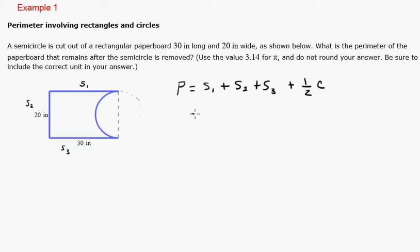So S1 would be the same as S3, right? This is like a rectangle. So this would be 30 plus 20 plus 30 plus one half. And what's the formula? The formula for circumference is 2 pi r. So it would be one half of 2 times 3.14.